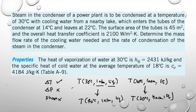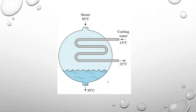What will happen in the condenser is that it will change the phase of the gas — the steam — to liquid. Therefore, we have to change the phase of the steam from gas to liquid. When we change the phase of the fluid, we have to maintain pressure and temperature. That is why in this figure, as you can see, we have steam at 30°C at the inlet, and the outlet of the condenser is also at 30°C.